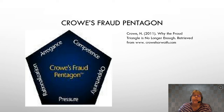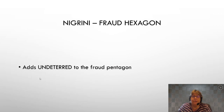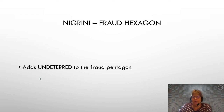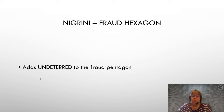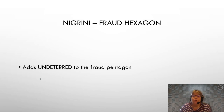In your textbook, Nigrini took the fraud pentagon — the original fraud triangle plus arrogance and competence — and added 'undeterred.' Undeterred means that if you think the odds of going to jail are so slim, you are not deterred by potential future penalties, and that is not enough to stop you. This creates the fraud hexagon. As we look at the fraud cases in this course, you'll see evidence of all these characteristics. That will be one of your first assignments: with the Ryan Loma case, listen to a podcast interview and determine which characteristics of the fraud hexagon were present.